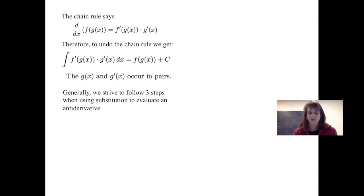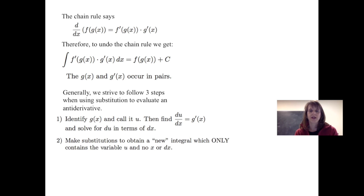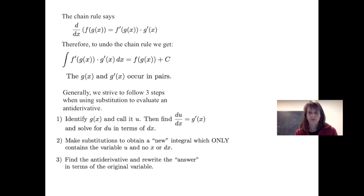In general, we follow three steps when using this method. First, we identify our function g of x and call it u. Then we find the derivative of u with respect to x, which is g prime of x, and solve for du in terms of dx. Next, we make substitutions to get a new integral that only contains the variable u and du — no x's or dx's. Then we find the antiderivative and rewrite the answer in terms of the original variable, undoing the substitution.